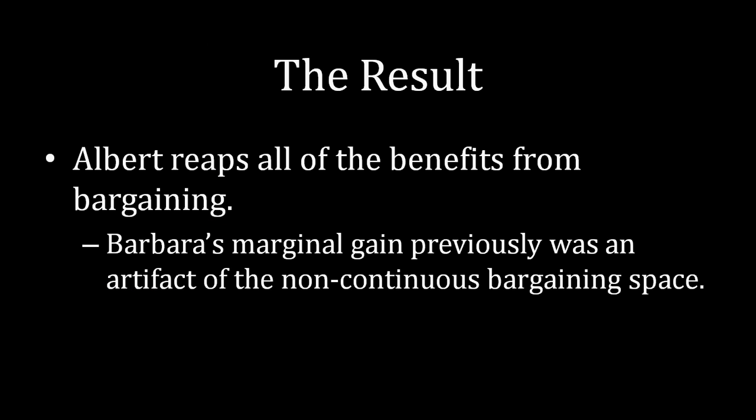So just to recap here, the result that we see in the continuous version of the Ultimatum game is that Albert reaps all of the benefits from bargaining. He takes all of the surplus for himself and leaves none of the surplus for Barbara. And what that means, relating back to what we saw in the discrete version of the Ultimatum game where Barbara was receiving some small sliver of the surplus, well, what this continuous version is showing us is that Barbara's marginal gain from back then was purely an artifact of the non-continuous bargaining space. So as soon as you make that bargaining space continuous, as soon as you flatten it out and allow for any division to be made, Barbara loses the small tiny fraction of bargaining power that she did have, and it's all in Albert's hands.